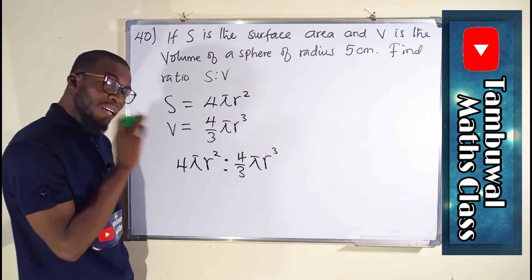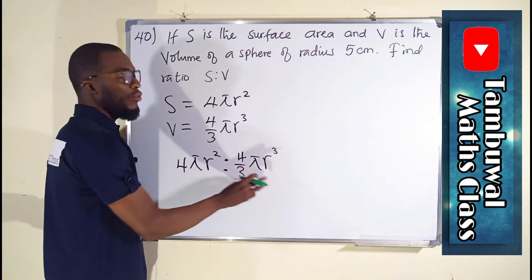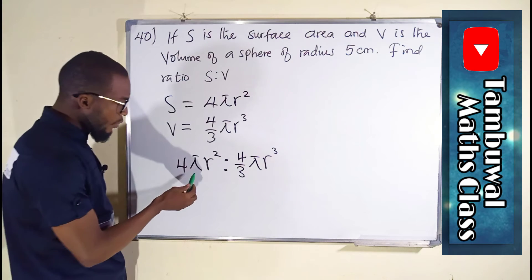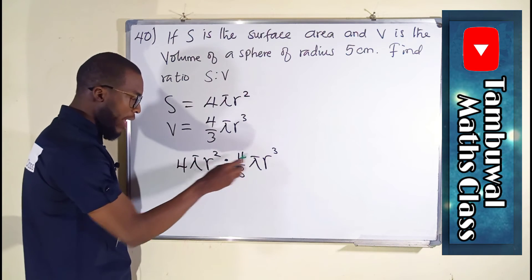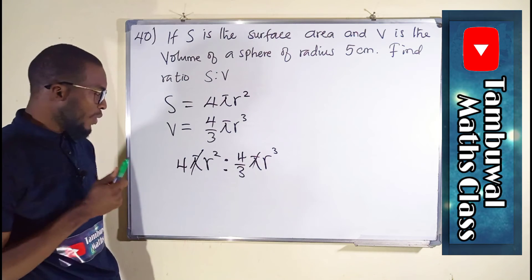Now, you are just going to treat this as an equation. Whatever you do here, you do it here. We have π here, we have π here, so we can cancel them out. That's number 1.